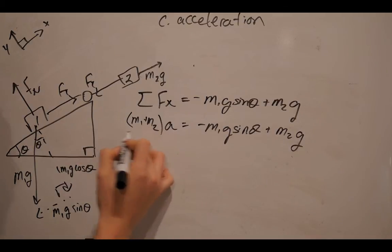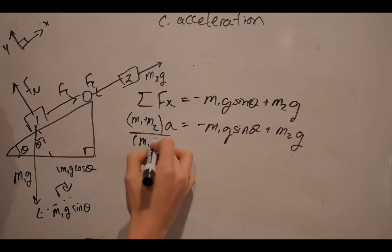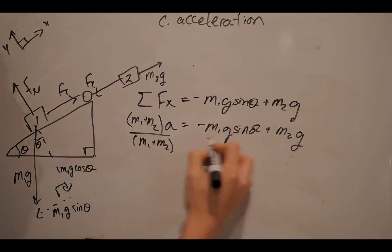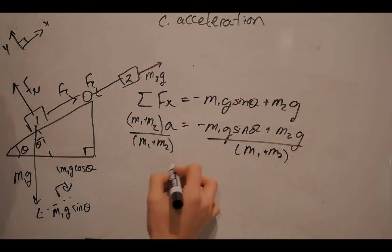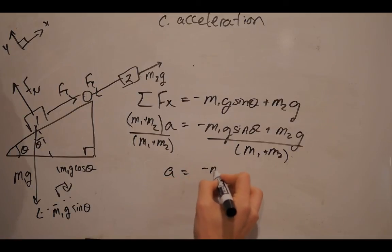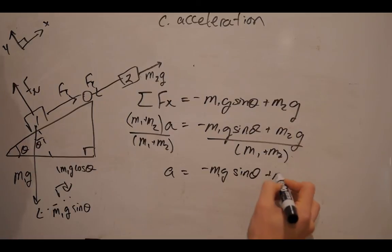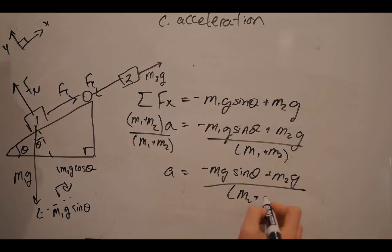so what we're going to do is we're going to divide both sides by M1 plus M2, so we can get the variable that we're looking for. And if we do that, we have our acceleration.